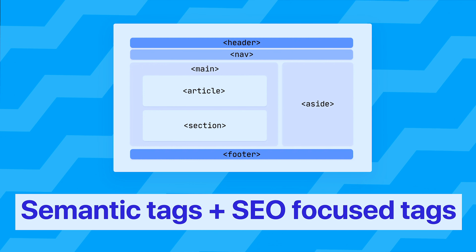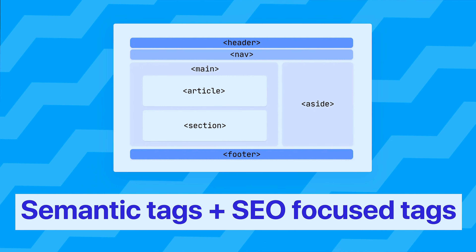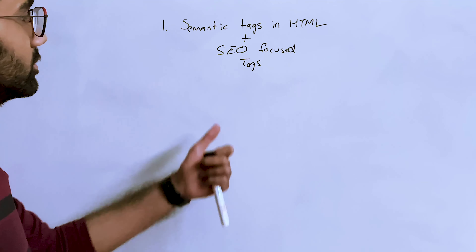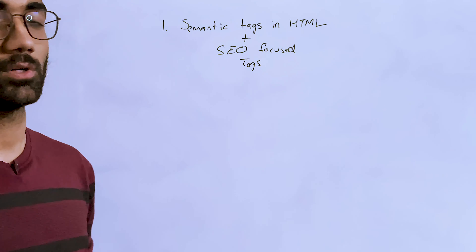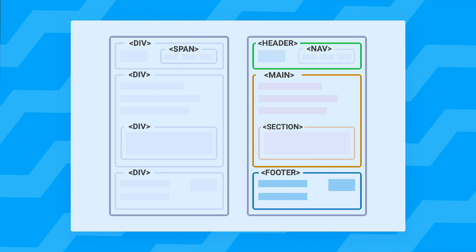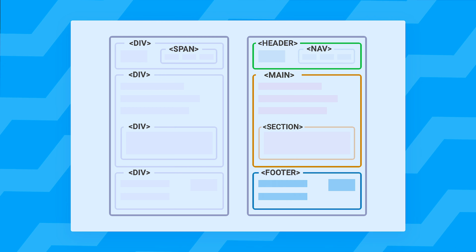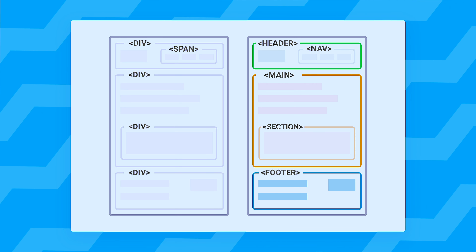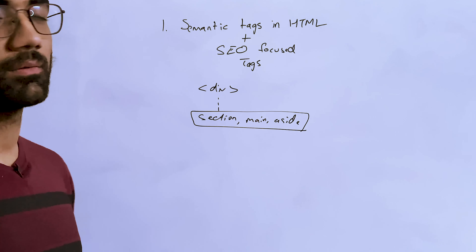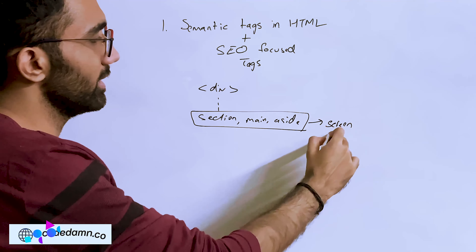The first thing a lot of you miss out on is semantic tags plus SEO focus tags. If you are one of those developers who uses divs all the way, that's probably not a good idea today, because we have so many tags like section, main, aside, etc., which provide a lot more semantic meaning — for example, for screen readers and accessibility.